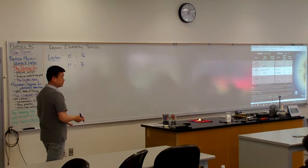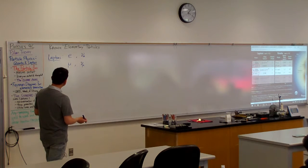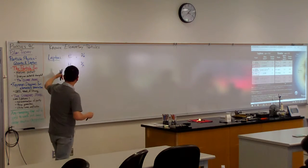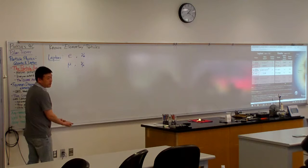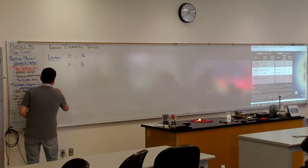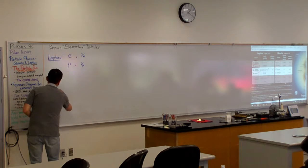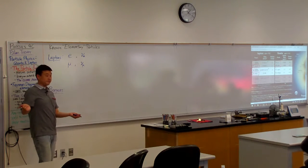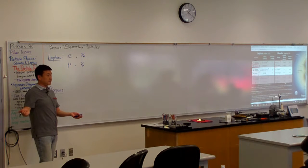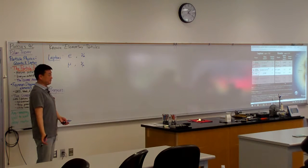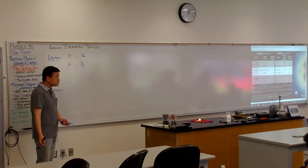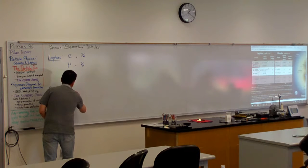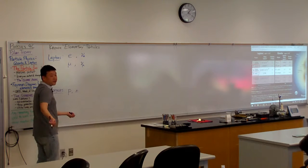And on to baryons - let me leave a gap between leptons and baryons because of what we talked about towards the end of last Thursday. What particles do we know that we're calling baryons? These are some very familiar particles: protons and neutrons. Those are the only two baryons that you know about. You don't know any other baryons yet.